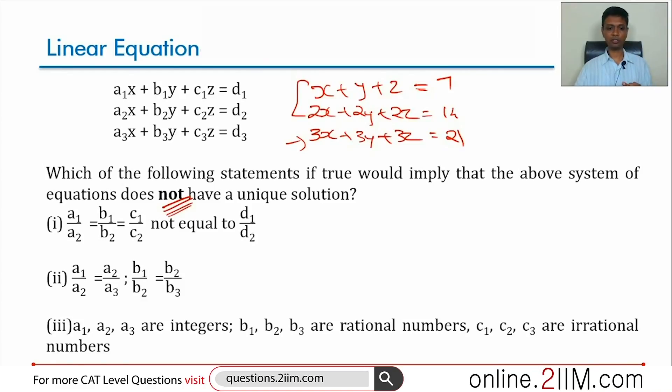Two equations, three variables probably not, will not get unique solution. Or we could have a scenario where two equations combine to give the third. That means we do not have three independent equations. Again that means the equation will not get a unique solution.